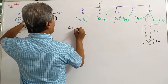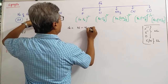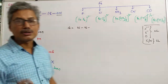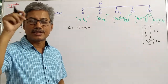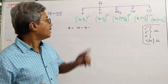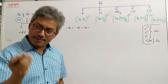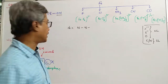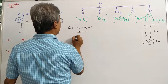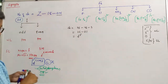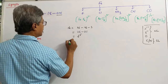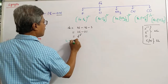Let us calculate the D electrons for [FeF₆]³⁻. Here Z is 26, minus 18 for the 3D series, minus the oxidation number. Most of the time, the oxidation number is just the charge of the complex — take the number and neglect the sign. Here the oxidation number is 3. So it is 26 minus 21, which means it is a D5 state — 5 electrons in the D subshell. The ligand fluoride is a weak ligand.